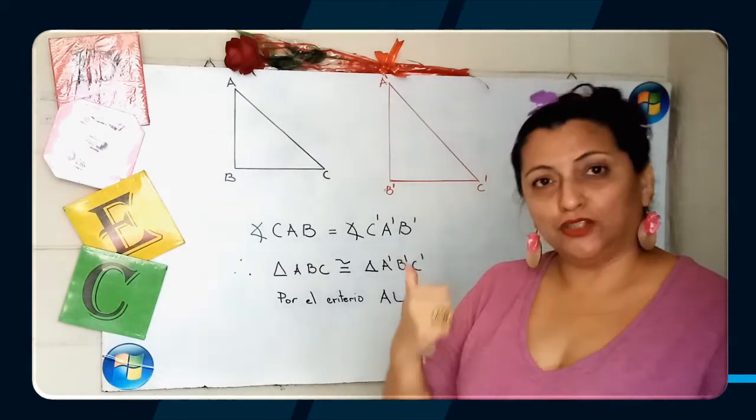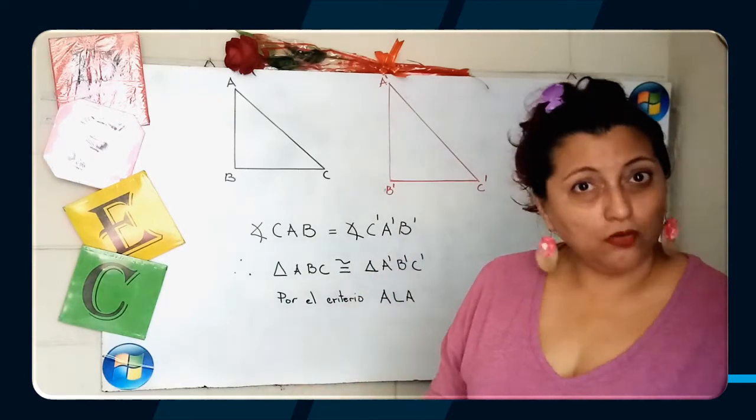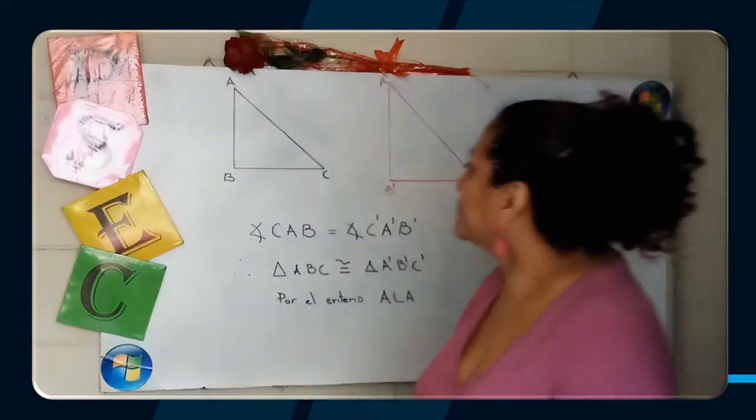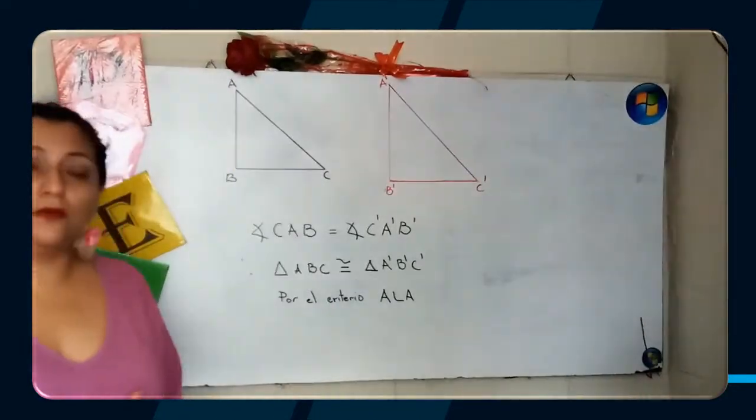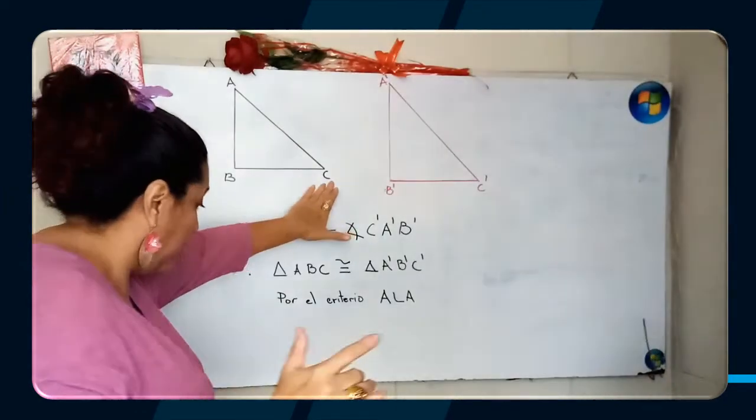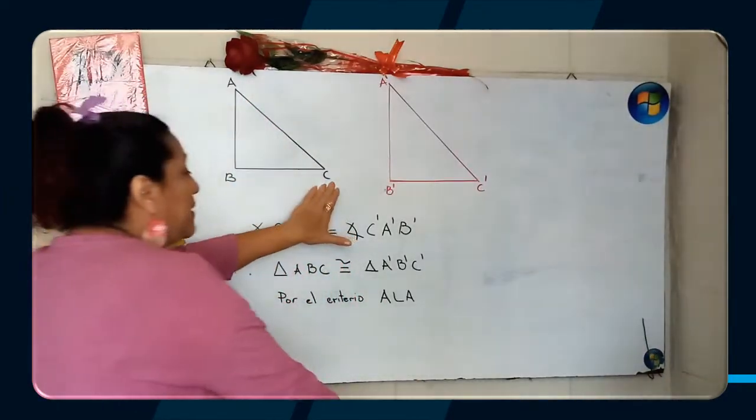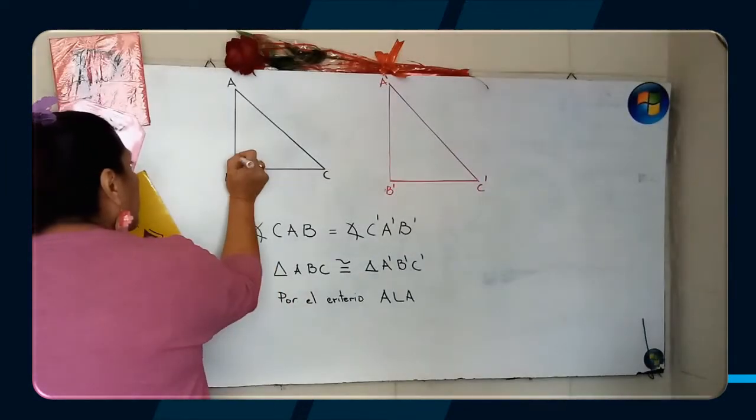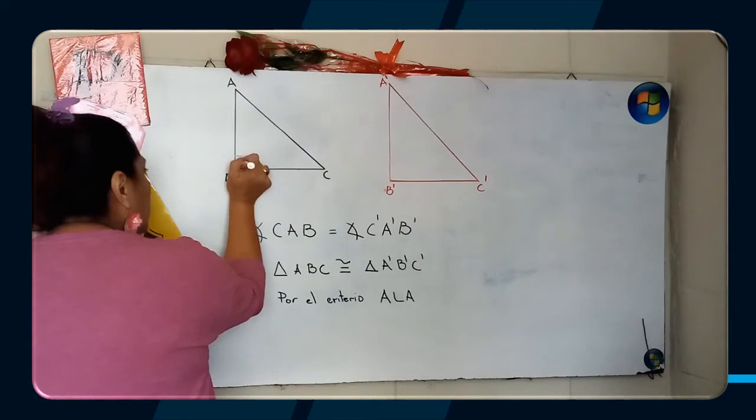Vamos ahora a demostrar que estos dos triángulos son congruentes. Veamos. Primero me dan un triángulo llamado ABC y me dicen que es rectángulo. Desde el momento que a mí me dicen que es rectángulo significa que este ángulo que está acá vale 90 grados.